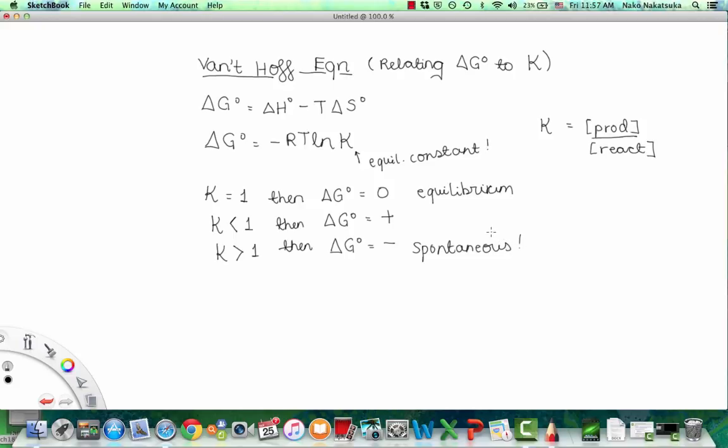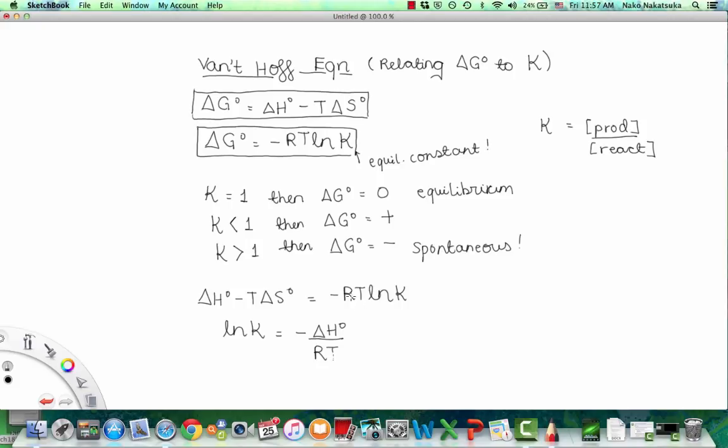Okay, so from here we can work on the Van't Hoff equation. Because we have this equation, where we relate ΔG to the equilibrium constant, and we have this equation where we relate it to the enthalpy and the entropy. If we equate these to one another, so ΔH - TΔS = -RTlnK, we can rearrange it, where we can write this out as lnK = -ΔH/RT plus ΔS/R.